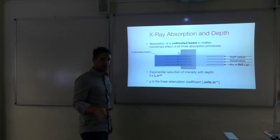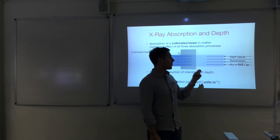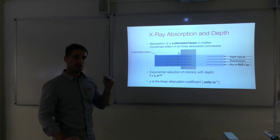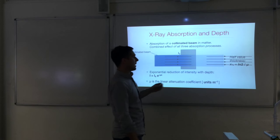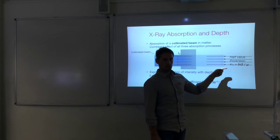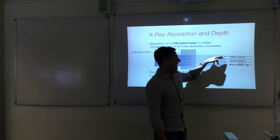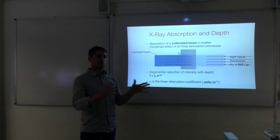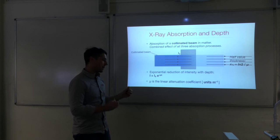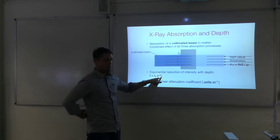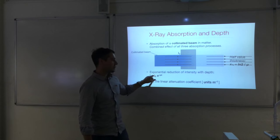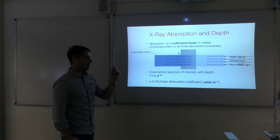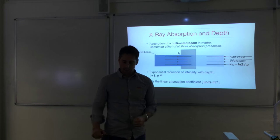The half value thickness is the amount of material required to reduce the intensity to 50%, so I equals I0 over 2. The half value thickness, denoted x-subscript-half, is equal to ln2 over mu — that is 0.693 divided by the linear attenuation coefficient — derived by substituting I equals I0 over 2 into the attenuation equation and rearranging, similar to the radioactive decay equation.